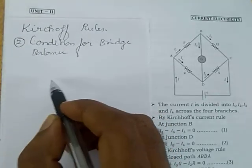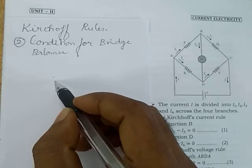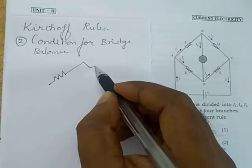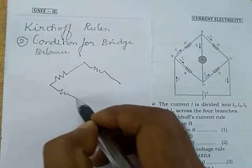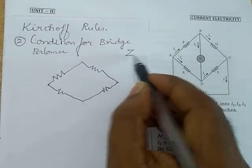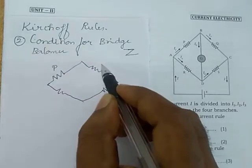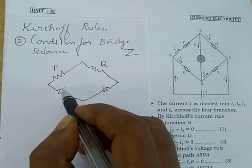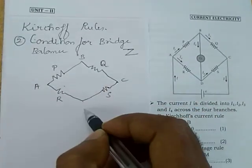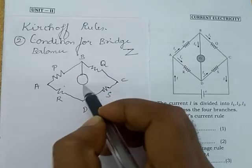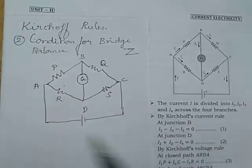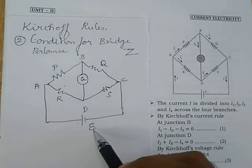The Wheatstone bridge has four resistors P, Q, R, S at nodes A, B, C, D. Points B and D are connected with a galvanometer G. The free terminals A and C are connected with a battery of potential difference ψ. After connection, current I flows, splitting into I₁ and I₂, then further into Iɢ, I₃, I₄.